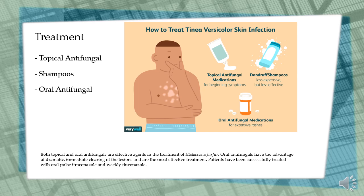Both topical and oral antifungals are effective agents in the treatment of Malassezia furfur. Oral antifungals have the advantage of dramatic, immediate clearing of the lesion and are the most effective treatment. Patients have been successfully treated with oral itraconazole and weekly fluconazole.